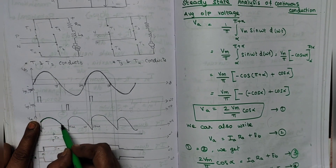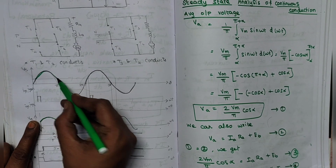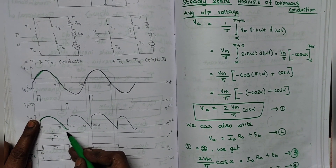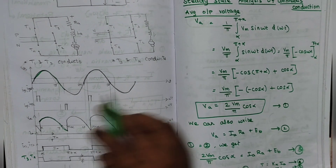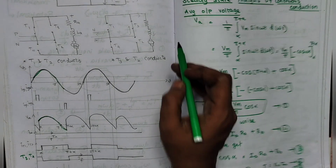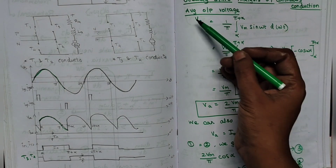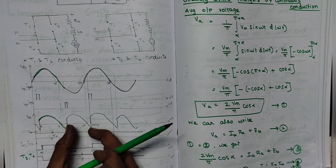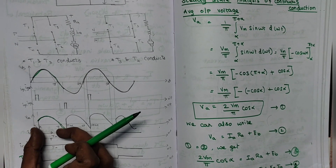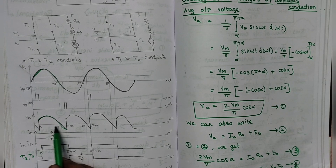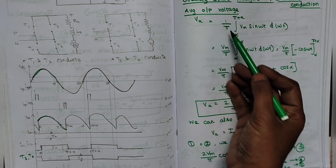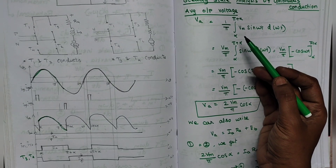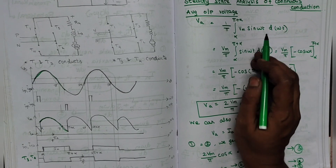From α to π + α the output voltage waveform is similar to that of the supply voltage Vs, where Vs = Vm·sin(ωt). So now we are going to see the steady state analysis of the continuous conduction — specifically the average output voltage. I am taking the period as 1/π because for each half cycle I am getting a similar, periodical waveform. The conduction time is from α to π + α, during which we have the same output as the supply voltage.